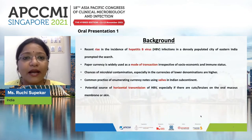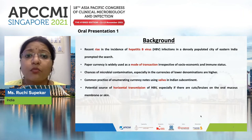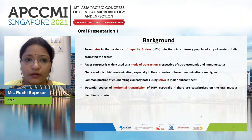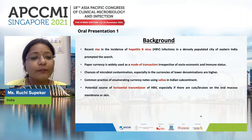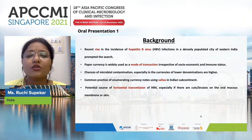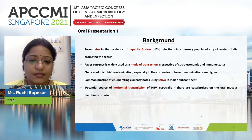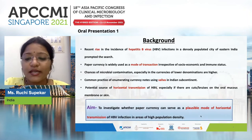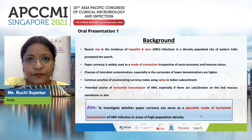The recent rise in incidence of hepatitis B virus infection in a densely populated city of eastern India prompted this search. Paper currencies are widely used as a mode of transaction regardless of socioeconomic and immune status of individuals. Lower denomination currencies have higher chances of microbial contamination as they are exchanged more frequently. The common practice of enumerating currency notes using saliva is prevalent in the Indian subcontinent and various other parts of the world. This represents a potential source of horizontal transmission of HBV, especially if there are cuts and bruises on the oral mucosa or skin. The main aim was to investigate whether paper currencies can serve as a plausible mode of horizontal HBV transmission in areas of high population density.